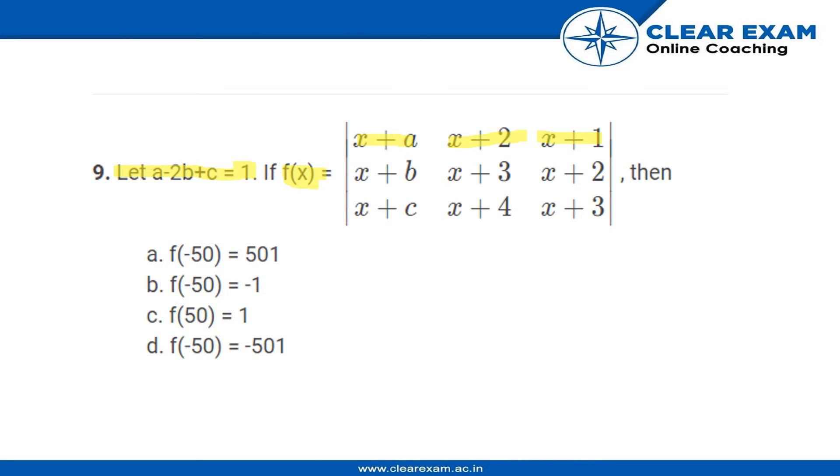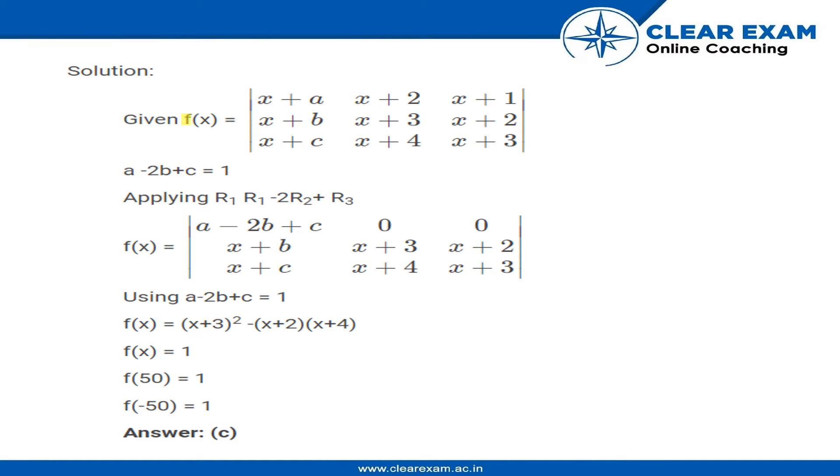We have to find which of these is correct. So we've been given f(x) and we've also been given that a minus 2b plus c is equal to 1. Now we'll find the value of f(x) by applying some row operations.